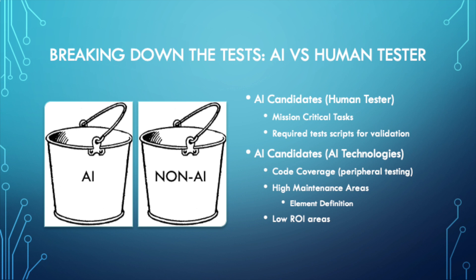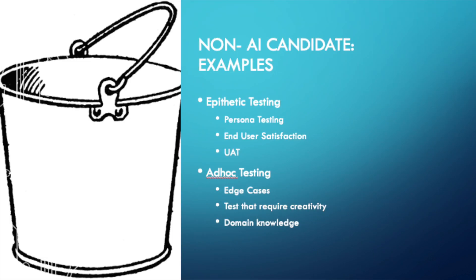Some great examples of human testing, outside of the mission critical tests, are user stories and test cases. On the non-AI candidate side, the actions performed by the human tester are really that empathetic testing, persona testing, UAT testing, and ad hoc testing. Ad hoc testing is a great example of where a human tester is still needed, because it requires creativity and a good amount of domain knowledge.